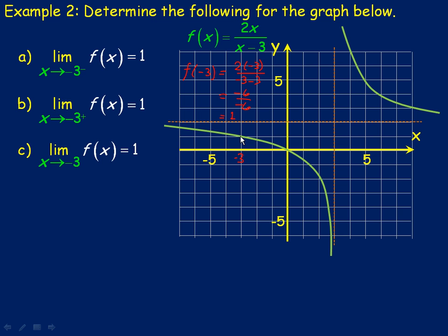Now, I'll give you an example before we end here of a place where the left and right hand limits are not the same. And so in this case, I'm talking about where x is 3. x is 3 here. This is actually a vertical asymptote.